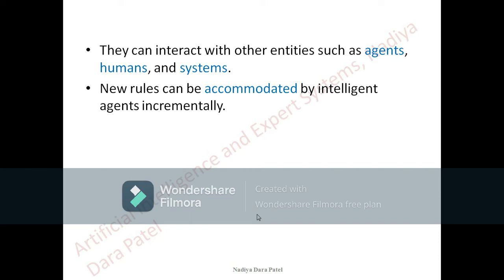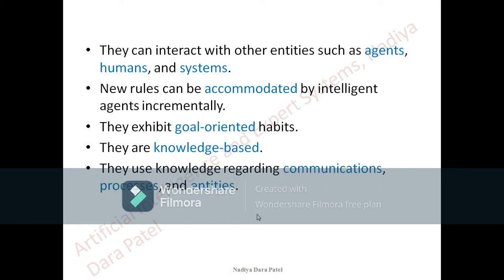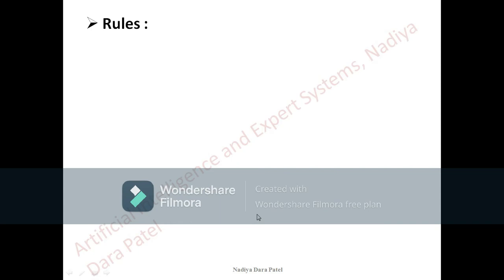New rules can be accommodated by intelligent agents incrementally — they should be capable of adapting to new things. Further, they exhibit goal-oriented habits; there should be a certain specific task or goal which they are supposed to perform. They are knowledge-based — they use knowledge regarding communication processes and entities. These are the basic characteristics or important factors which agents should possess.